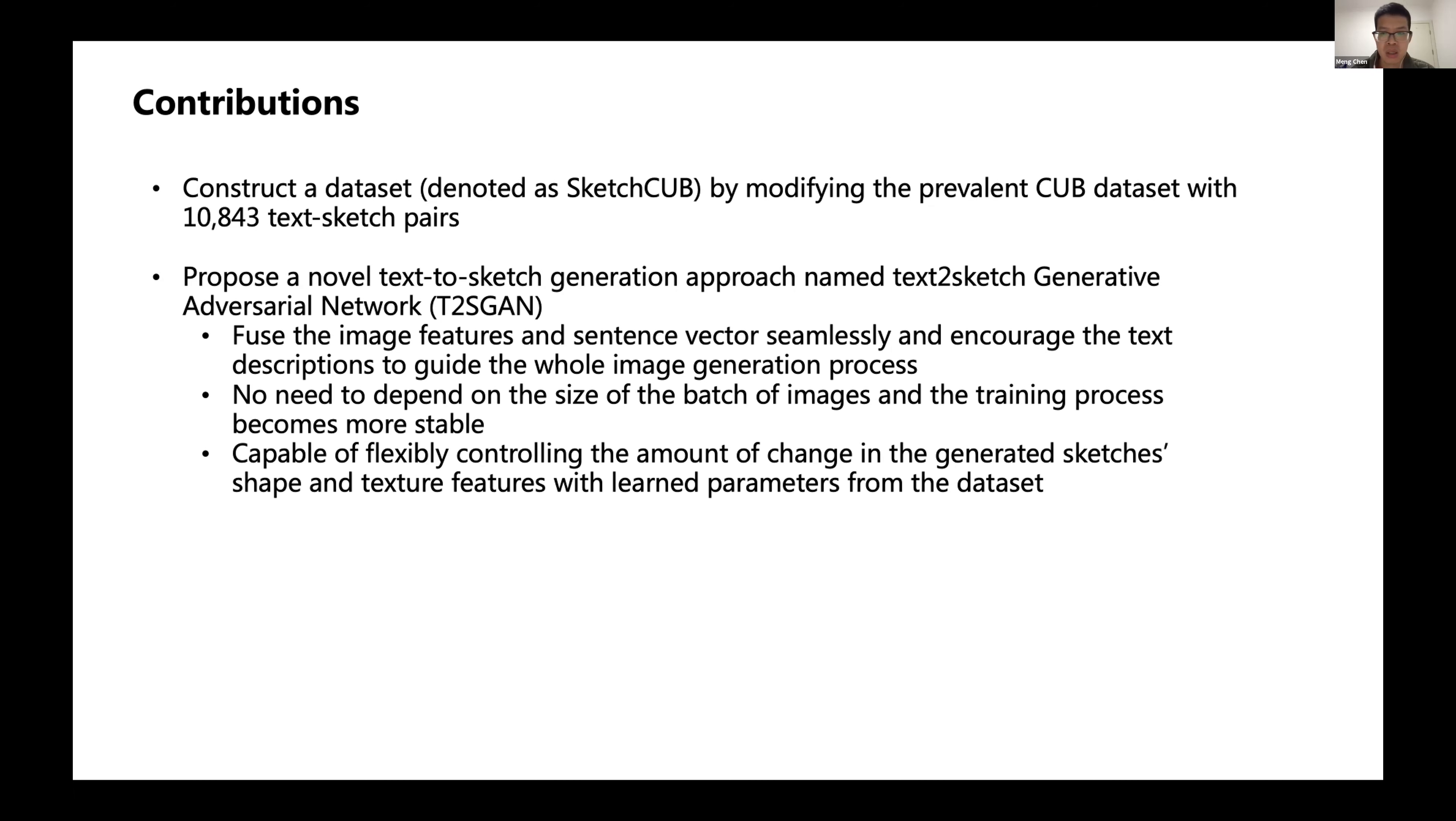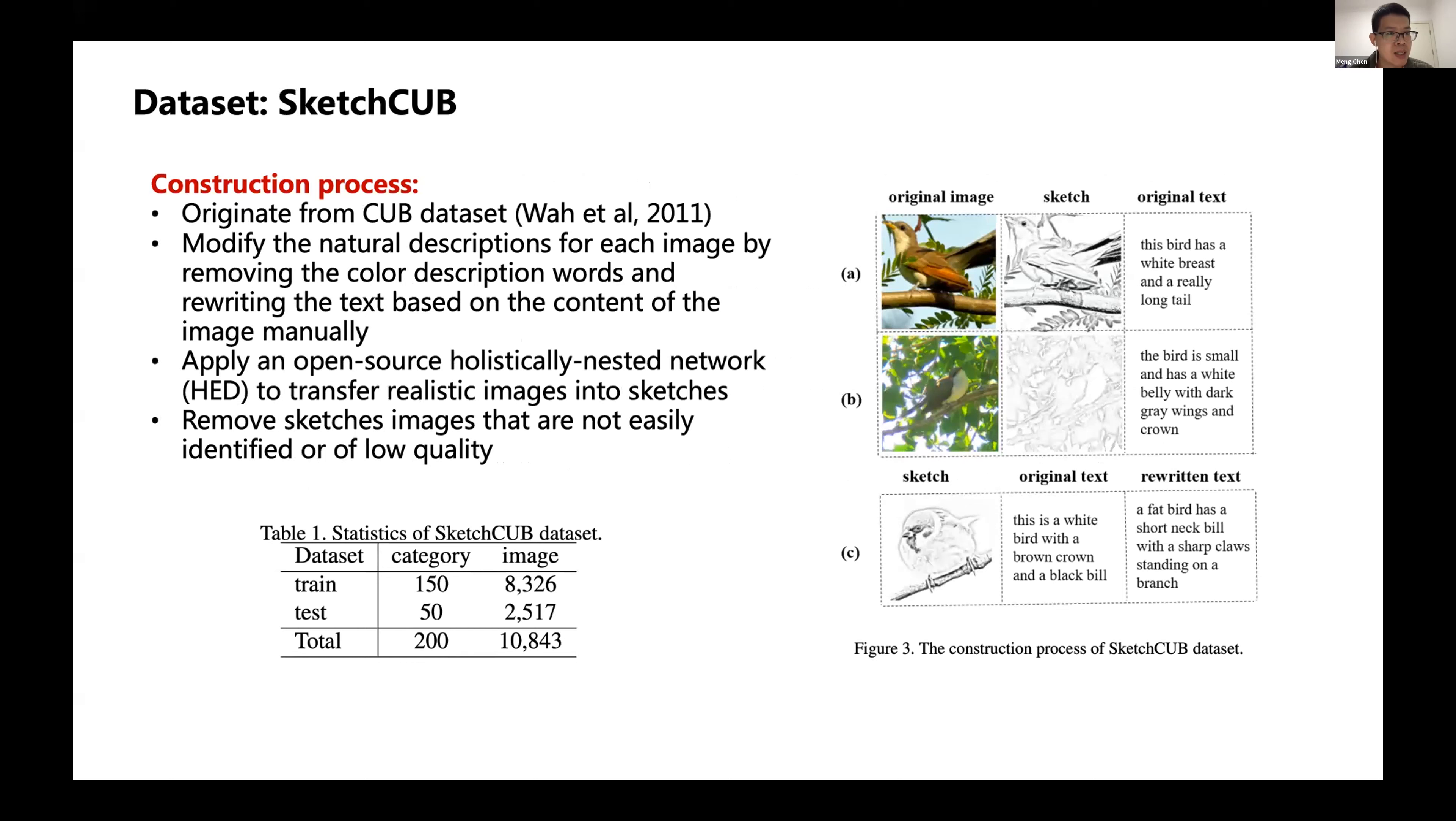We also propose a novel text-to-sketch generation model based on popular generative adversarial networks. We propose a novel block called CLIN, which has the following advantages. First, it can fuse the image features and sentence vector seamlessly and encourage the text descriptions to guide the whole image generation process. Second, the model does not need to depend on the size of the batch images, and the training process becomes more stable. Finally, our model is capable of flexibly controlling the amount of change in the generated sketch's shape and texture features with learned parameters from the dataset.